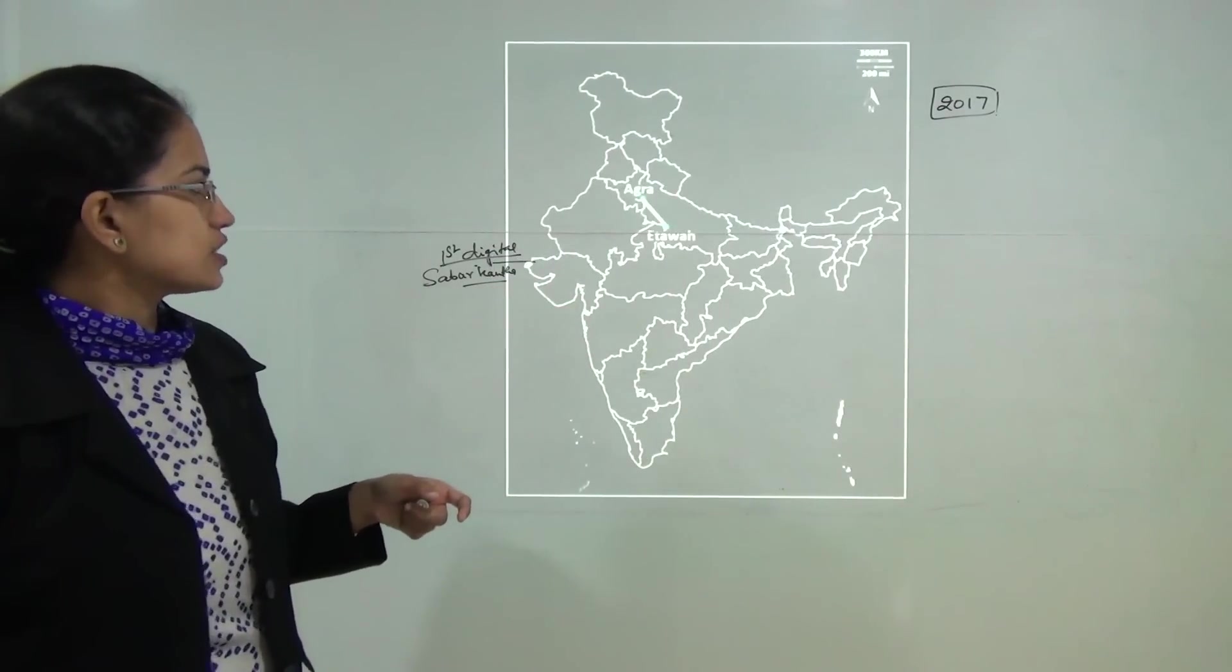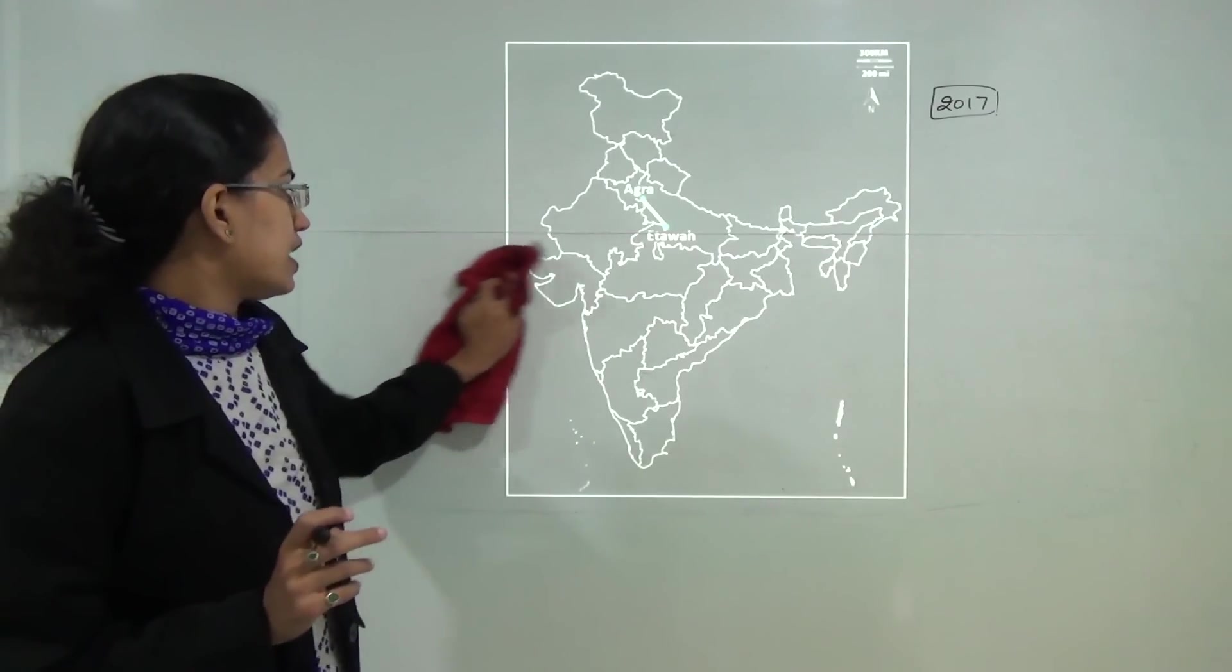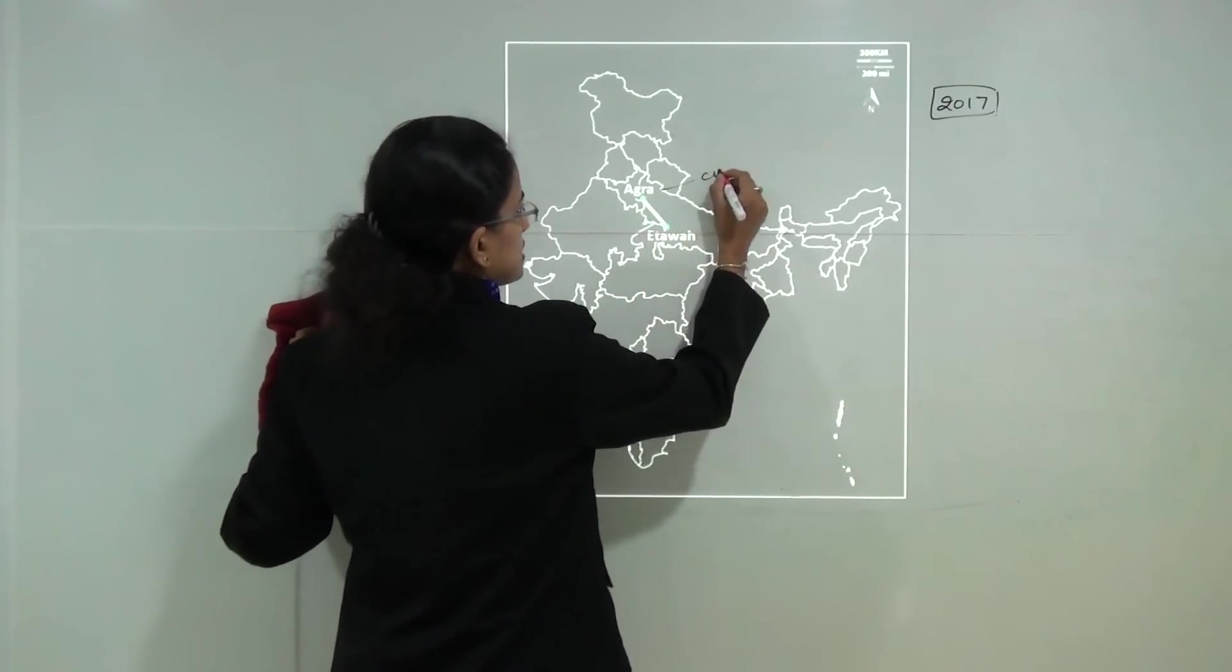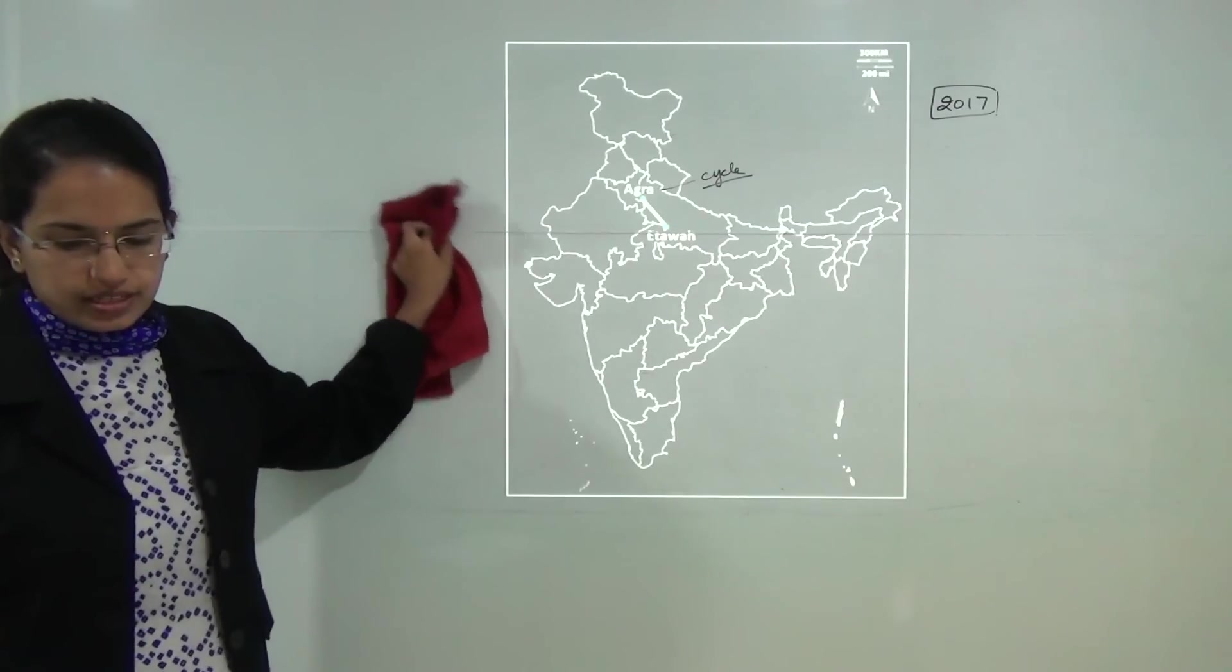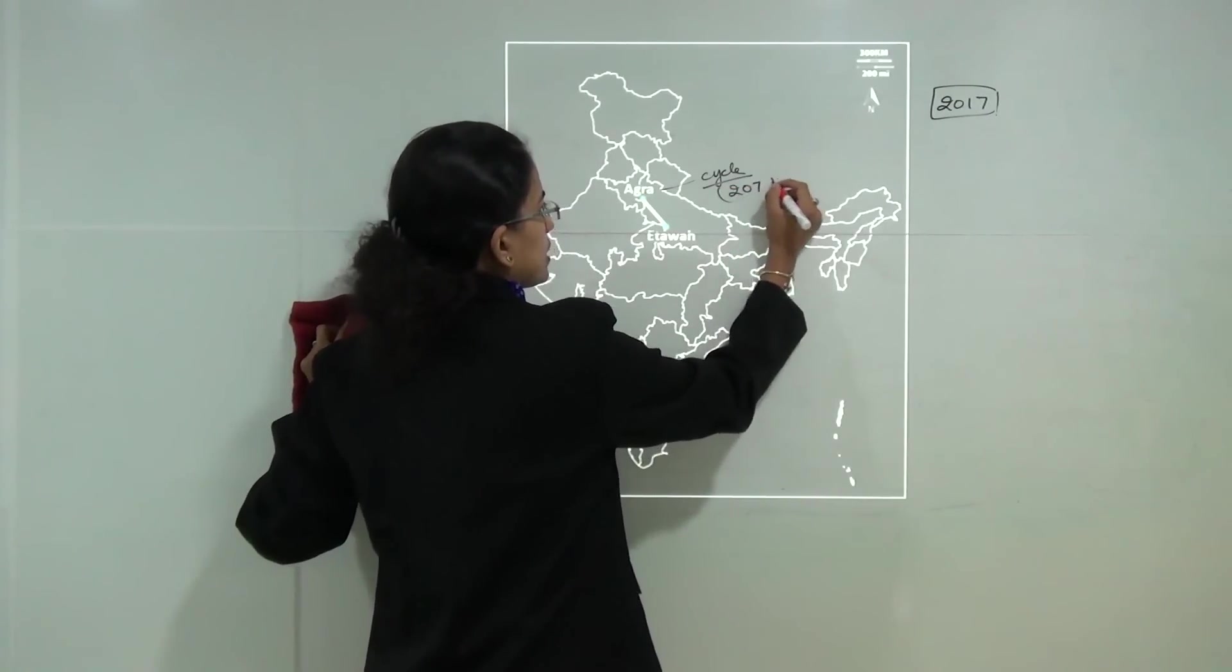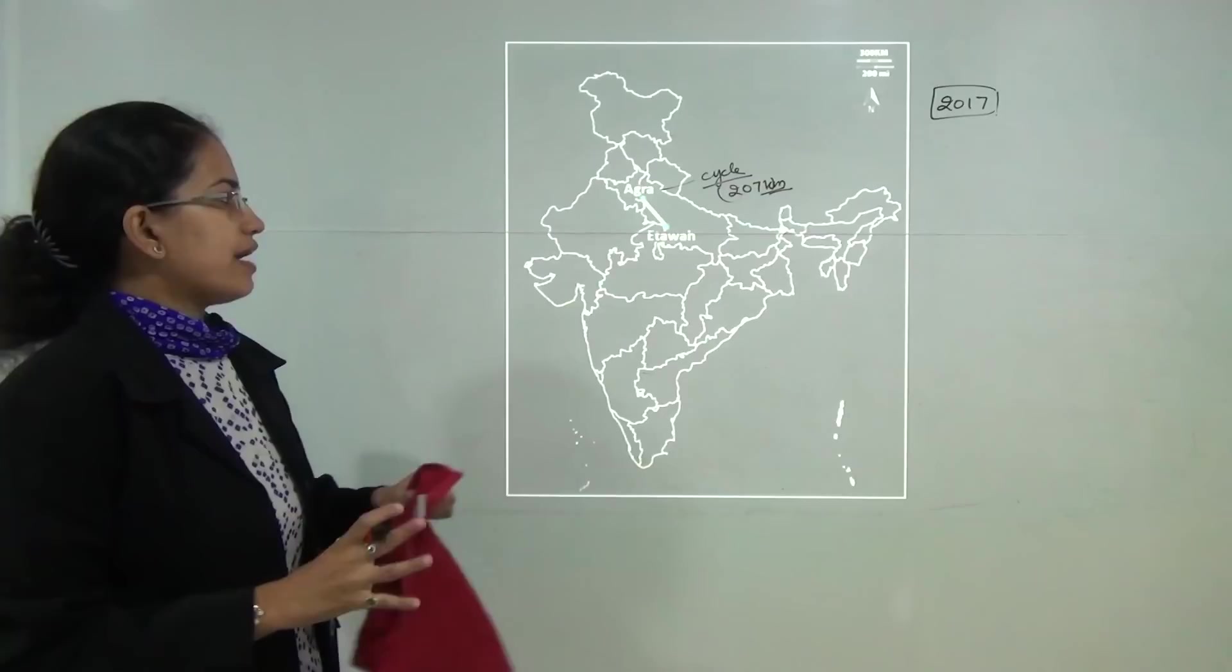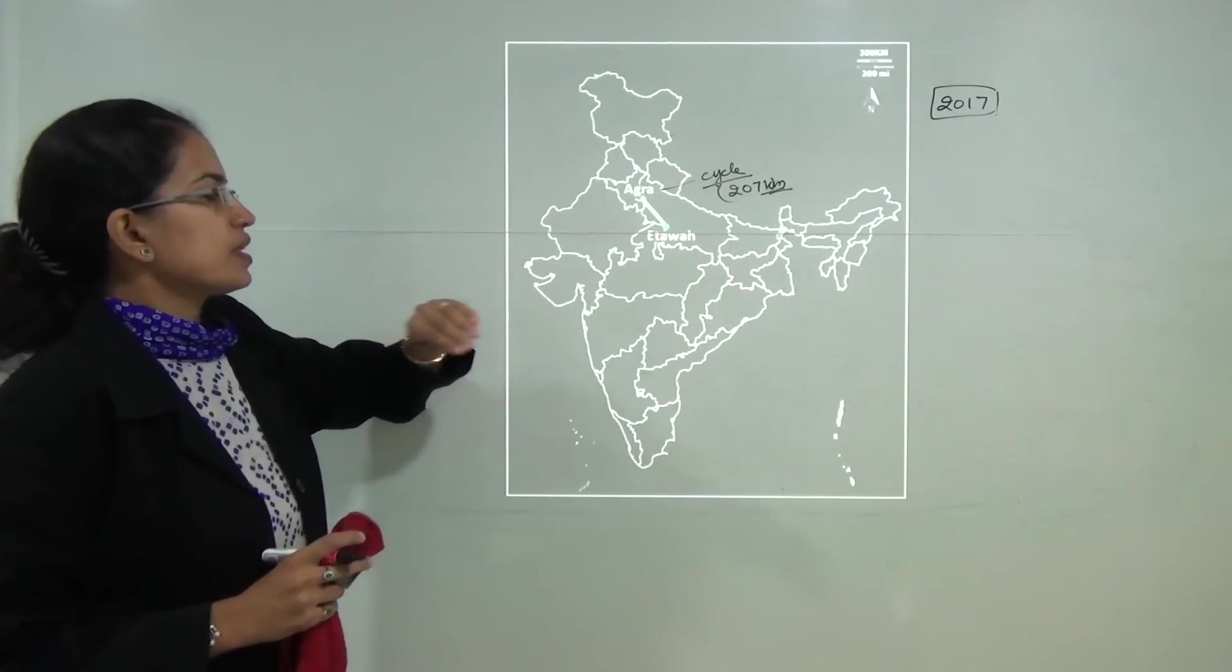The next location is Agra Etawah highway. This Agra Etawah highway is Asia's longest cycle highway which has an exclusive track for cycling and is of a length of around 207 kilometers. It would cover important religious and tourist places on the way and finally end at the gate of Taj Mahal in Agra.